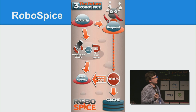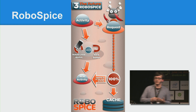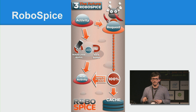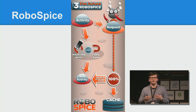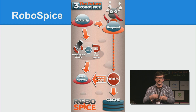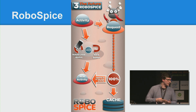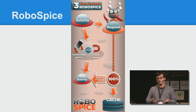How does RoboSpice solve it? The main philosophy is that everything works in a Service. You run the Service, it does the work you need, and it returns the result to your activity through listeners. So you can rotate your phone, hit the back button, and it always returns to the listener on the currently active activity. You can also do caching and other things.